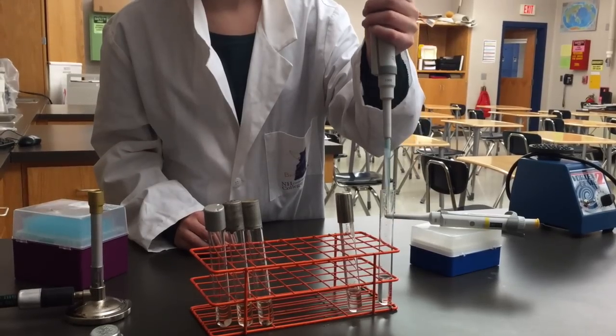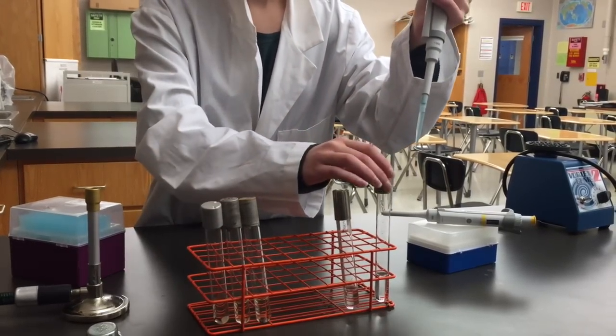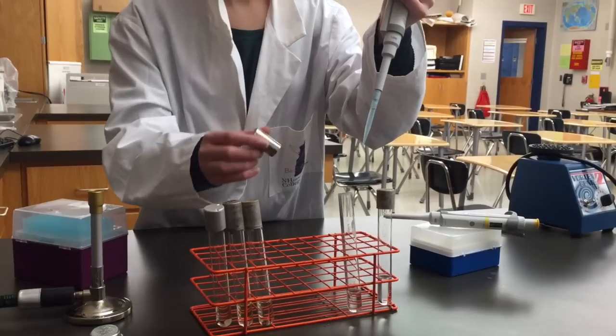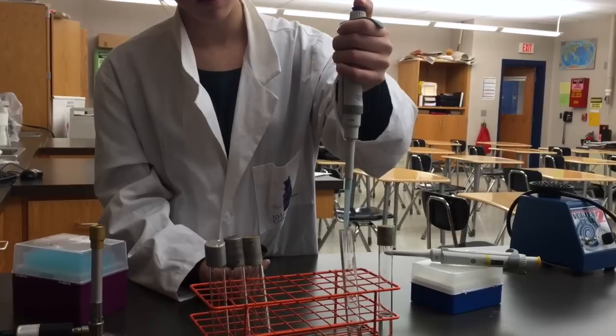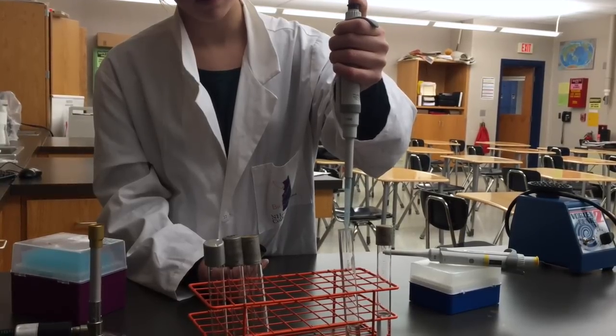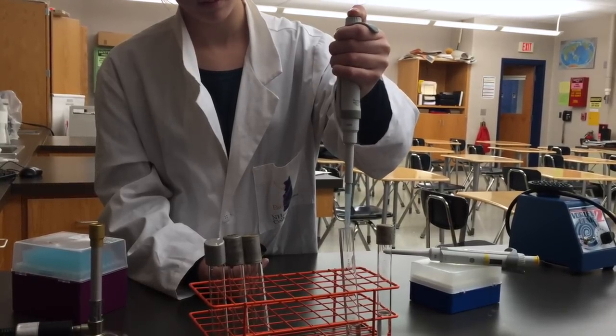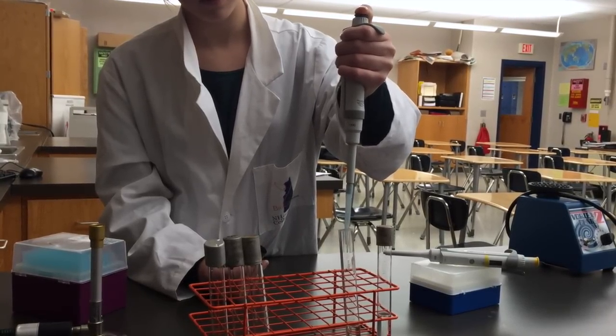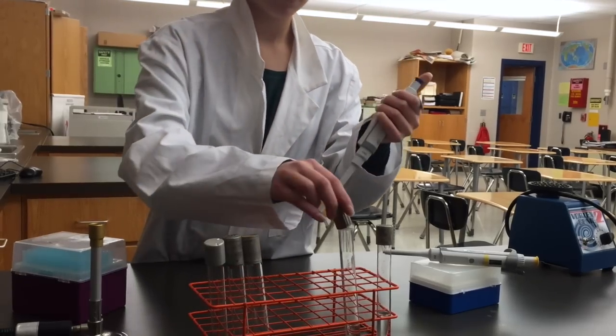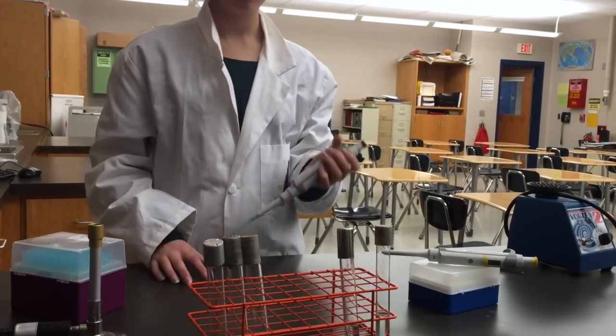Once you have the liquid into the pipette tip and are ready to transfer the volume, you can slowly push down on the control button to the first depression, and then push down further to the second depression. By pushing the control button down to the second depression, we are ensuring that all of the volume that we gathered is being pushed out of the pipette tip and transferred into the new media source.